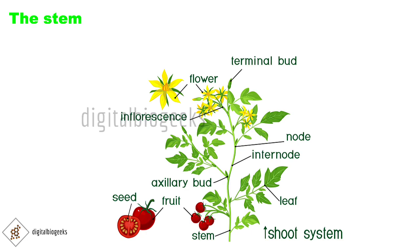The stem is the part above the soil that bears branches, leaves, flowers, and fruits. The root develops from the radicle of the germinating seed, while the stem arises from the plumule of the germinating seed. The stem arises from the plumule and the root arises from the radicle.